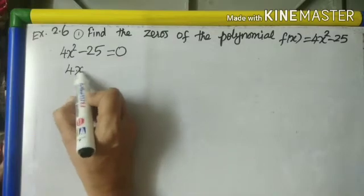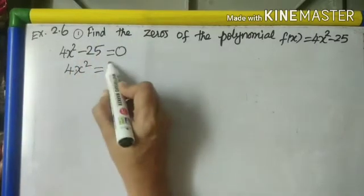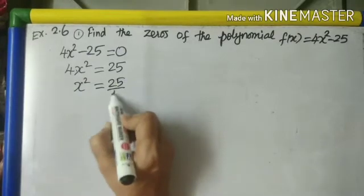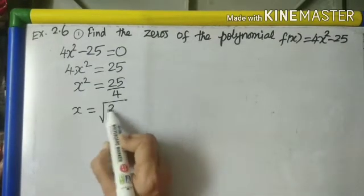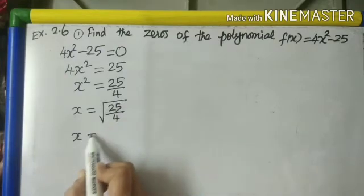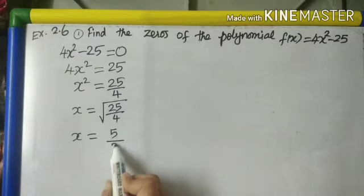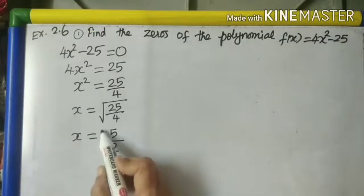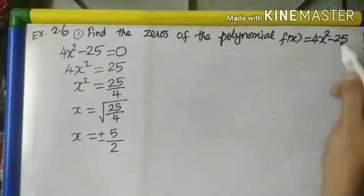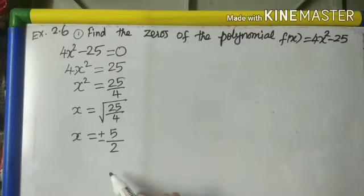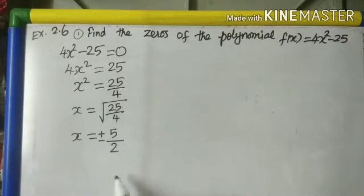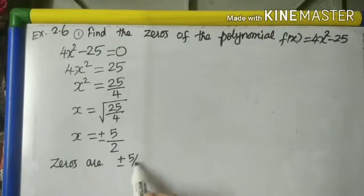It is not ordinary factorization — there is no x term. So just bring 25 to the other side: 4x² = 25, so x² = 25/4, or x = √(25/4). Remember whenever we find a square root we put plus or minus. So when the power is 2, we must get 2 answers. The two zeros are 5/2 and -5/2, so the zeros are ±5/2.